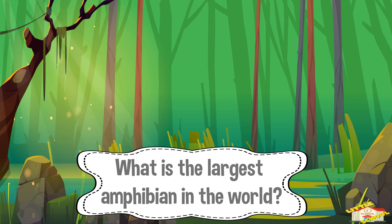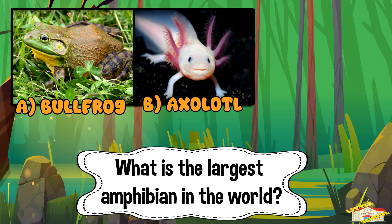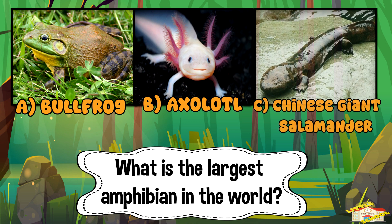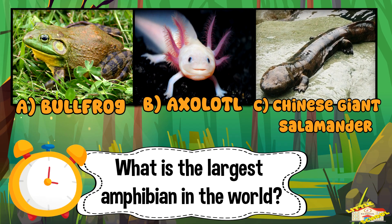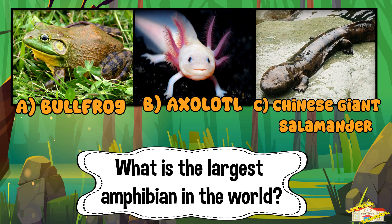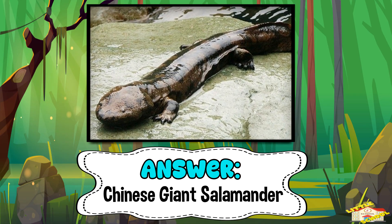Question 8: What is the largest amphibian in the world? A) Bullfrog, B) Axolotl, or C) Chinese giant salamander? Five, four, three, two, one. And the answer is letter C — Chinese giant salamander.